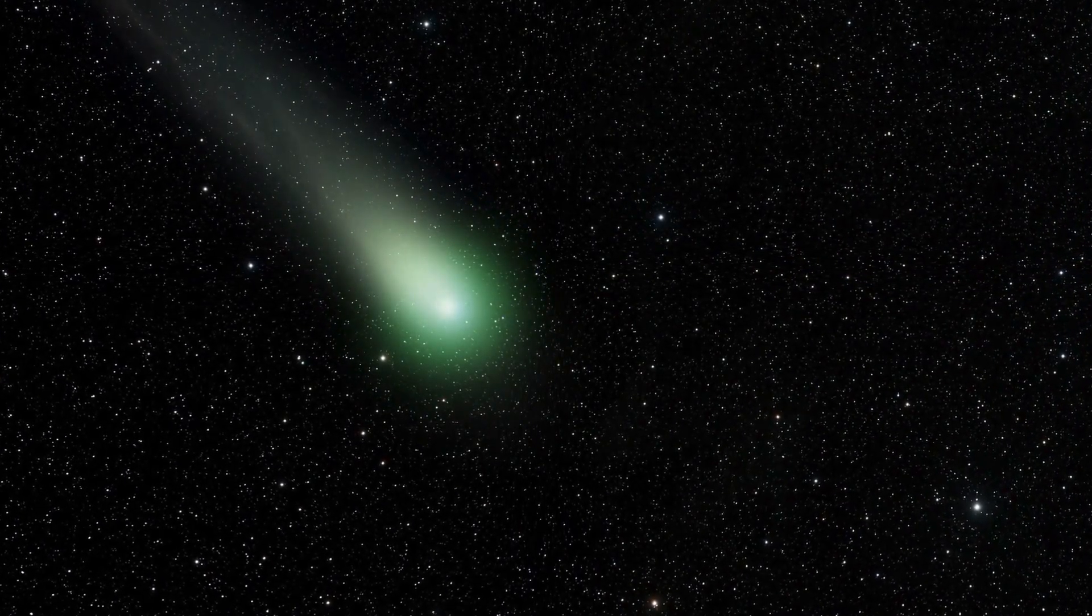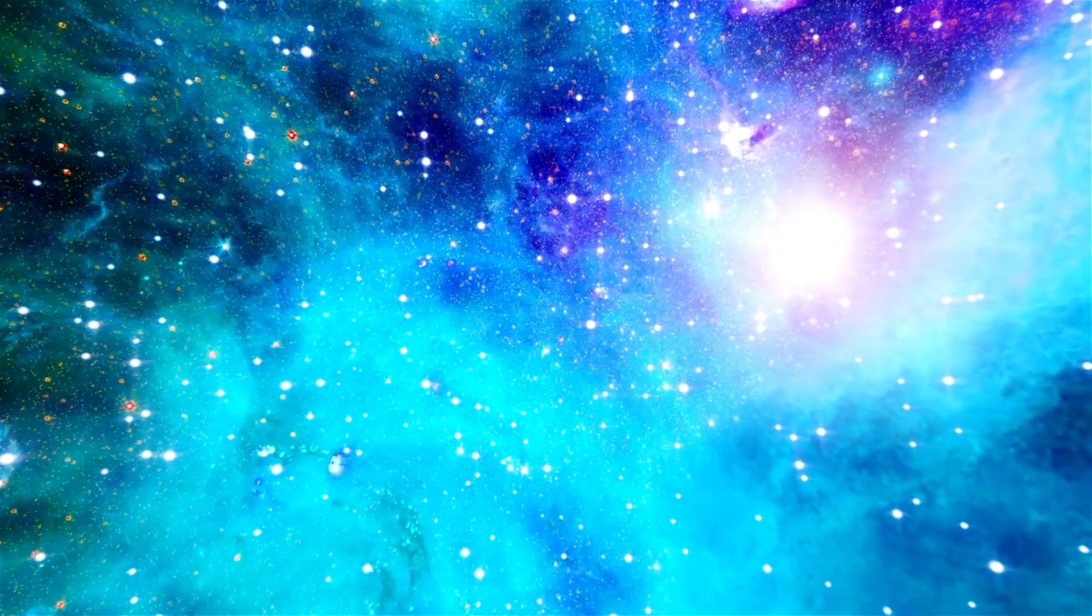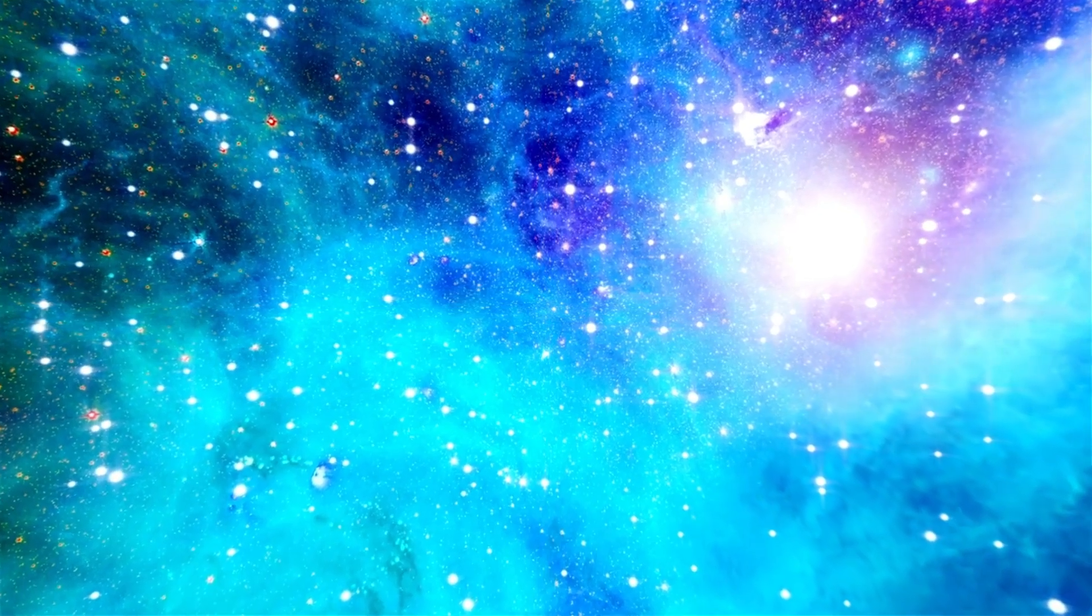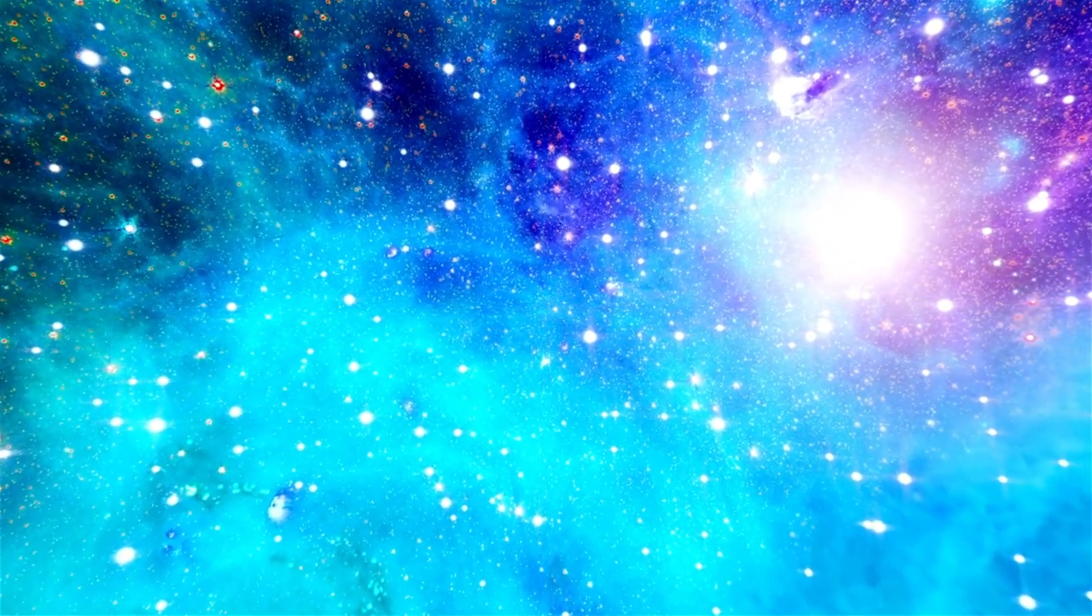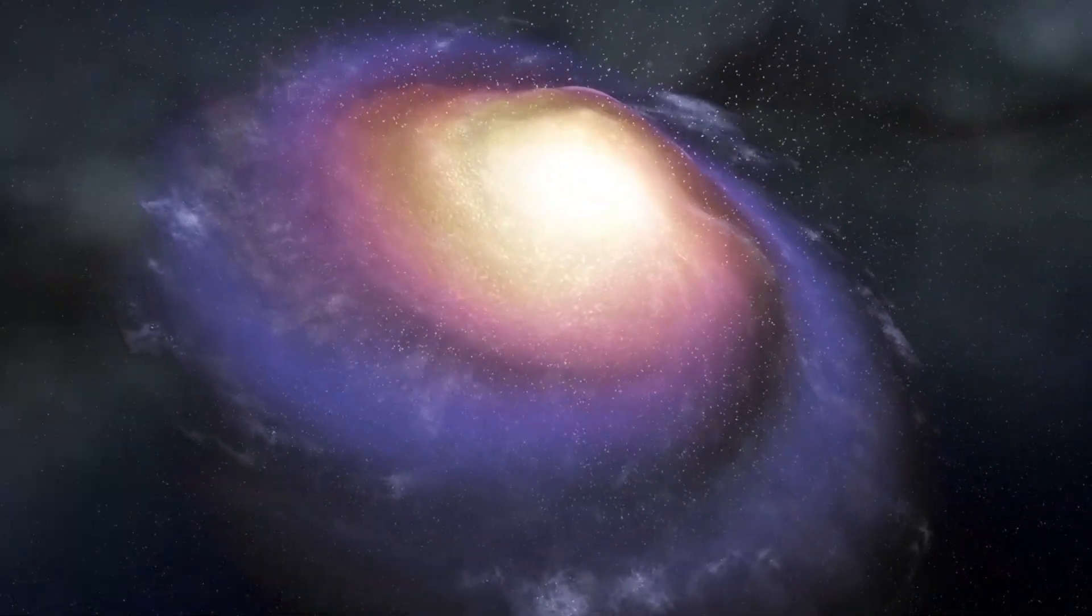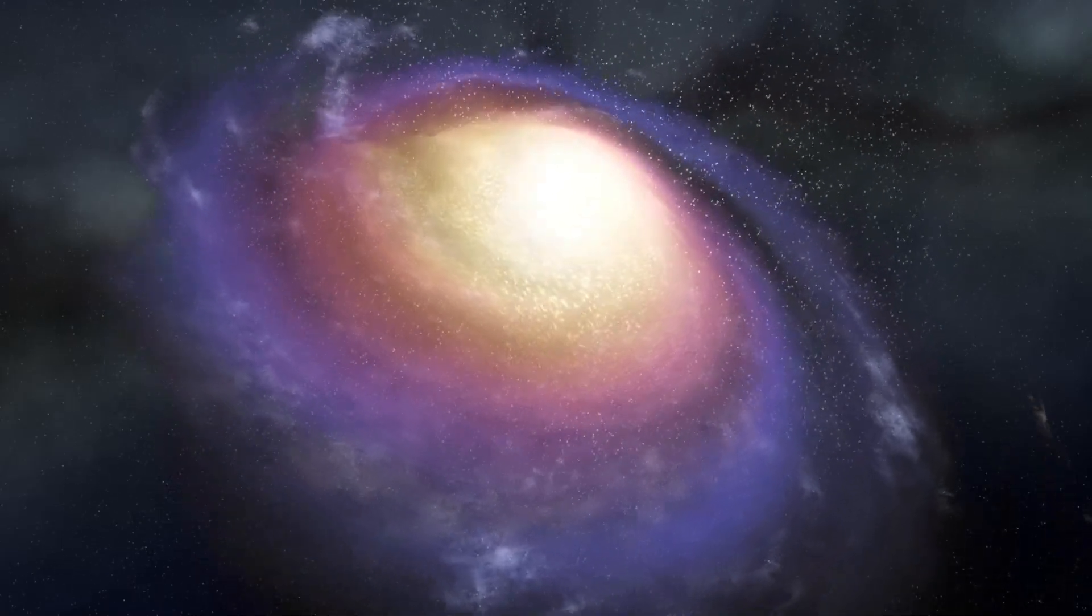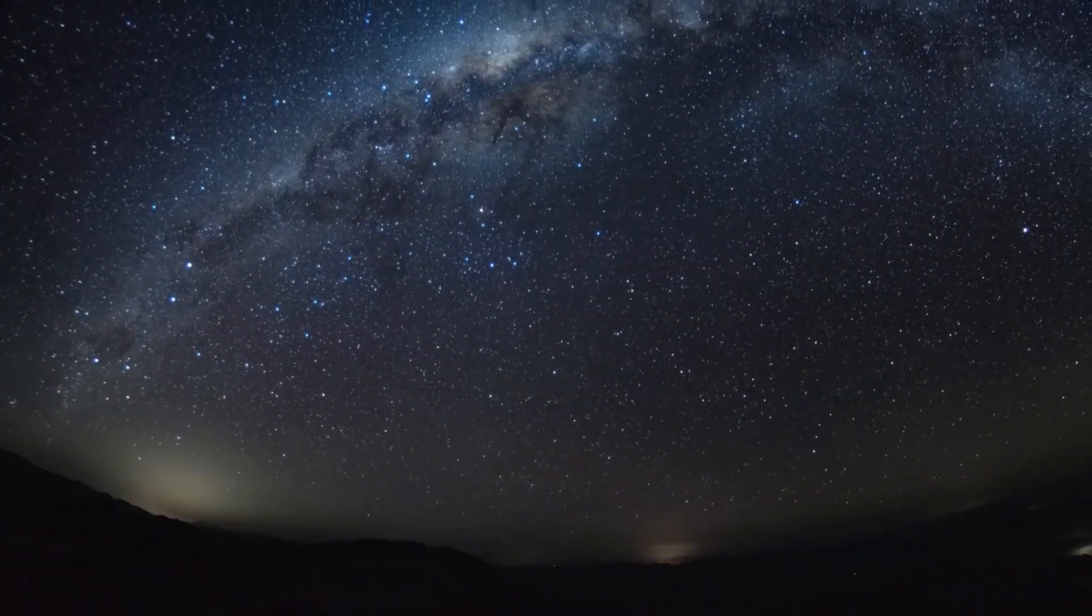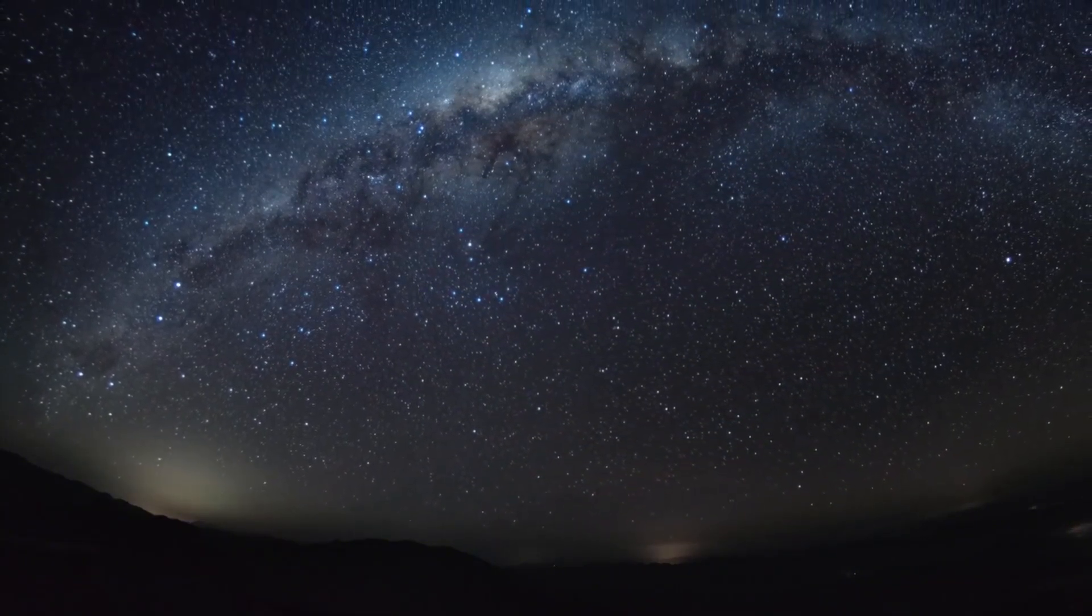The width of the observable universe is estimated to be around 93 billion light years. This amazing figure results from various factors, including the distance light can travel in one Earth year. The age of the universe, estimated at 13.8 billion years since the Big Bang, suggests that the observable universe extends 13.8 billion light years in each direction from Earth, leading to a diameter of 93 billion light years.